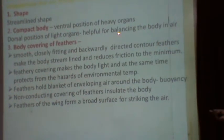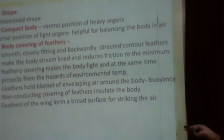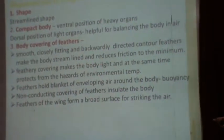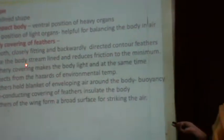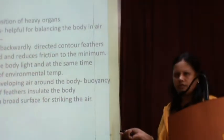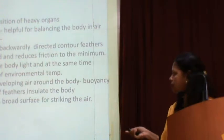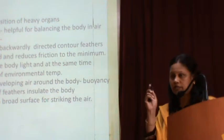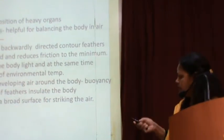The third feature is the body covering of feathers. The complete body is covered by feathers that are smooth, closely fitting, and backwardly directed, making the body compact. Birds are warm-blooded animals and these feathers are non-conductors of heat, keeping the body warm. External air is also trapped between the feathers, making the body lightweight and enabling flight.